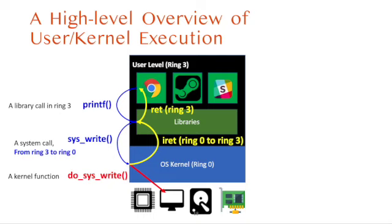This is how vertical context switching — switching from user to kernel and kernel to user — works. Switching from user to kernel is done by a system call, which is a software interrupt in JAWS, and switching from kernel to user is done by iret.